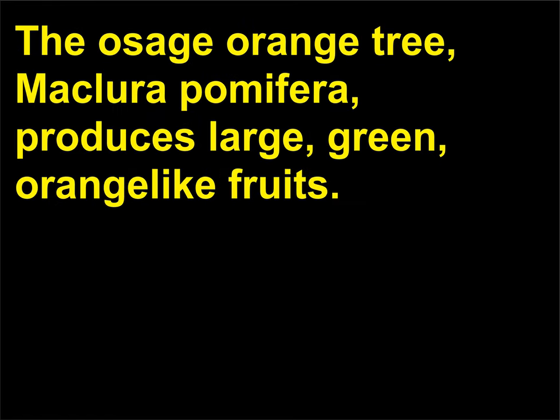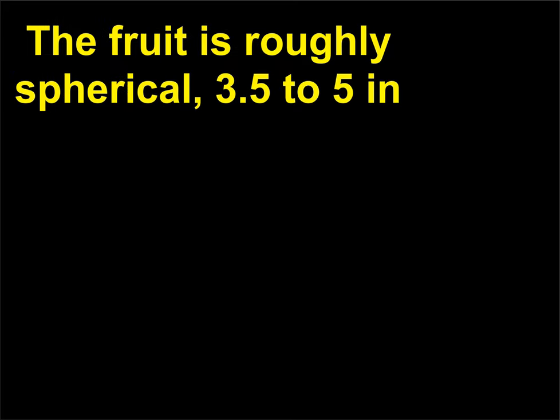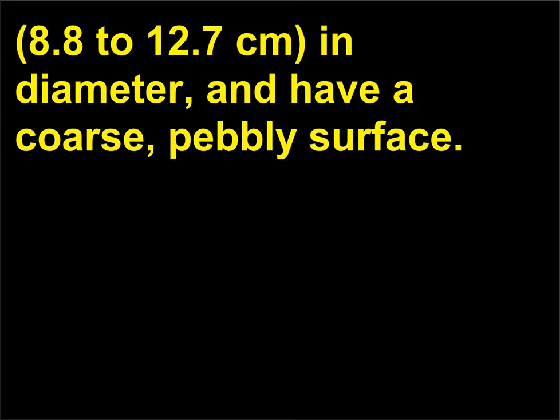What is a monkey ball tree? The Osage orange tree, Maclura pomifera, produces large, green, orange-like fruits. The fruit is roughly spherical, 3.5 to 5 inches (8.8 to 12.7 centimeters) in diameter, and has a coarse, pebbly surface.